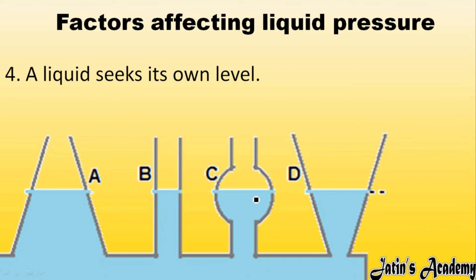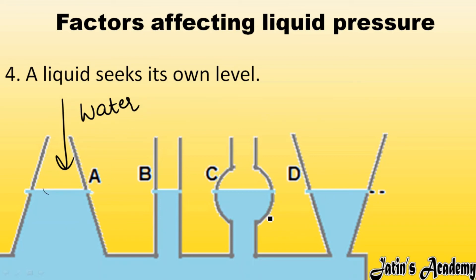The fourth factor: a liquid seeks its own level. Whenever we pour liquid into different vessels — for example, water poured into vessels A, B, C, D of different shapes and sizes — the water takes the same level in all beakers, irrespective of shape and size. This is because pressure at the base is the same due to the same density, so the liquid seeks the same level.